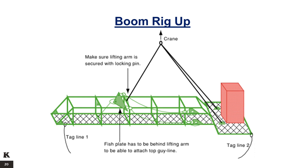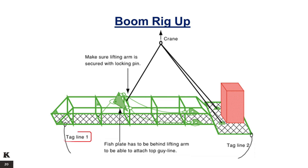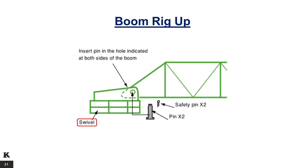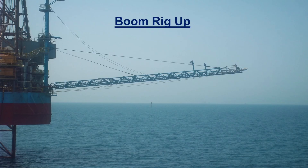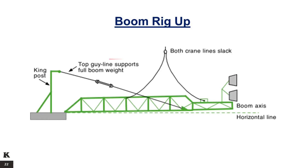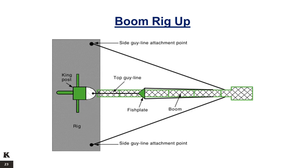Boom Rig-Up. The boom is lifted with the crane. Make sure the lifting arm is secured with a locking pin. The fish plate has to be behind the lifting arm to be able to attach the top guy line. Make sure to use tag lines during the lifting operation. Connect the boom to the welded base plate with swivel to allow horizontal and vertical movements. Insert the pin in the hole indicated at both sides of the boom and secure it with safety pins. Attach the vertical or top guy line to the king post to support the boom weight. The boom axis should be placed slightly above the horizontal axis. Attach the horizontal or side guy lines to their attachment points on the rig structure and orient the boom horizontally.